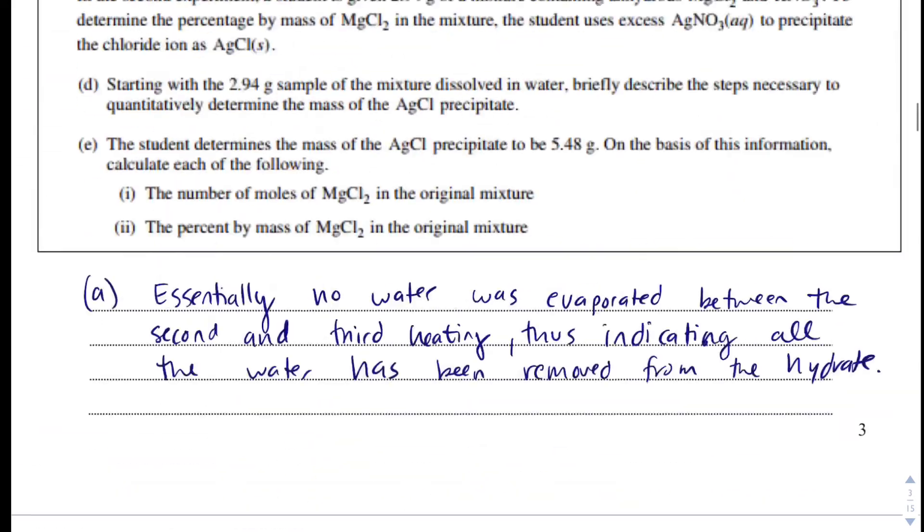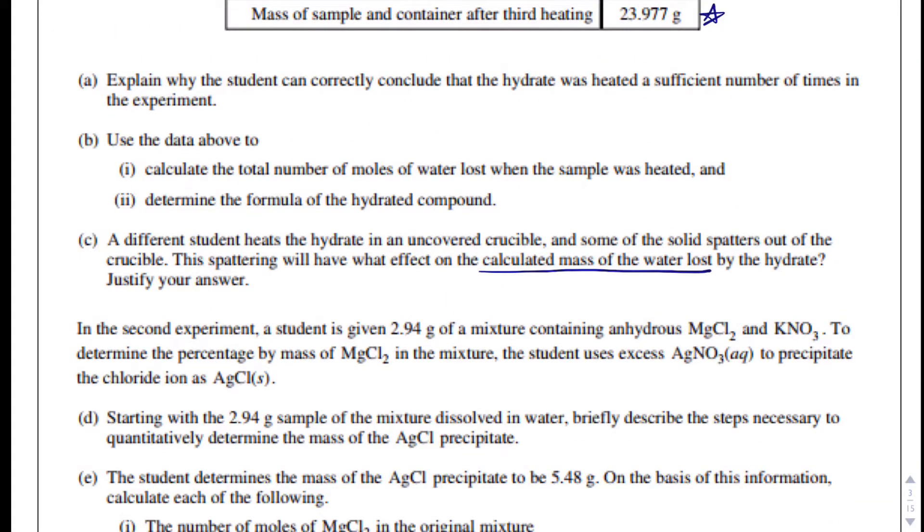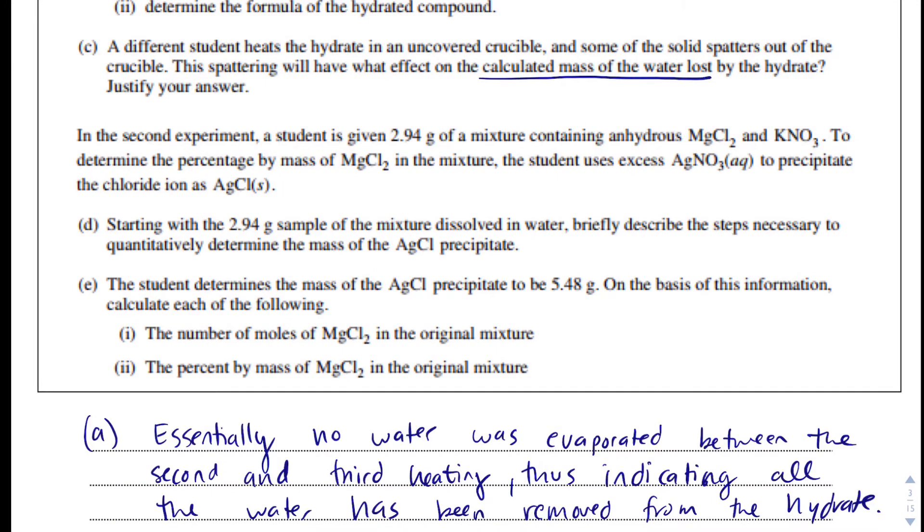Okay, now, we've got Part C done. Now, I'm going to work on Part D. They say we've got a second experiment, and a student is given a 2.94 gram mixture containing anhydrous magnesium chloride and potassium nitrate to determine the percent by mass of magnesium chloride. When I hear that, that's going to be grams of magnesium chloride over the 2.94 grams total, and then percent times by 100. Sometimes it's easy to goof up on that formula, but it's not anything more than that. The student uses excess silver nitrate to precipitate the chloride ion as silver chloride.